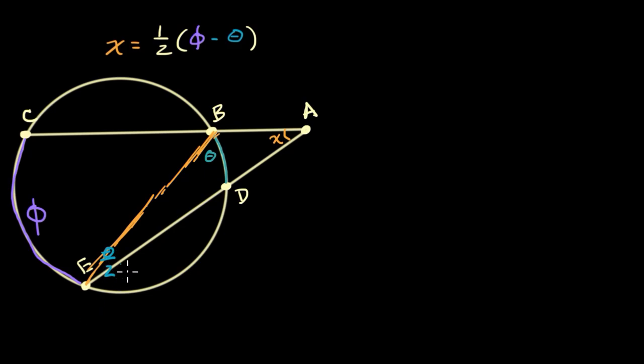So that's interesting. It still doesn't quite get us to X yet, but we have another inscribed angle that intersects an arc whose measure we know. We have this angle right over here, angle CBE. That angle, it intersects phi. So this is going to be phi over two.